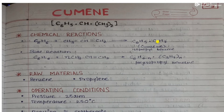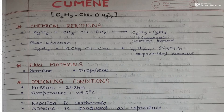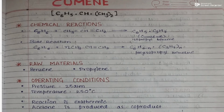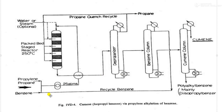The raw materials for this reaction are benzene and propylene, and H3PO4 is used as a catalyst. The operating conditions are a pressure of 25 atm and a temperature of 250 degrees Celsius. The reaction is exothermic and acetone is produced as a co-product.